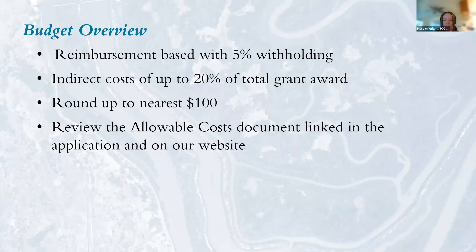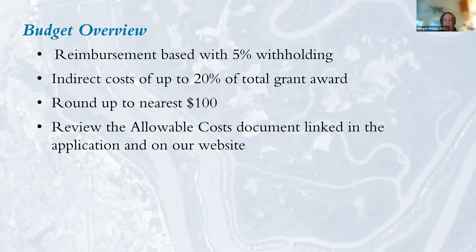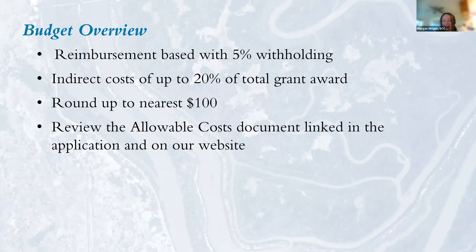The budget section: grants are reimbursement-based, meaning you pay project-related costs up front and submit invoices for grant disbursement. A 5% withholding is applied to each disbursement, released when the project is finished. A percentage of funds can be dispersed up front if necessary — discuss this with your project manager if selected. Applicants may budget up to 20% of the grant total towards indirect costs, and please round to the nearest $100. Refer to the Explore the Coast allowable cost document on the website for more detail.